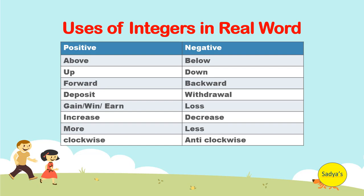clockwise. Corresponding words representing negative numbers are below, down, backward, withdrawal, loss, decrease, less, anticlockwise.